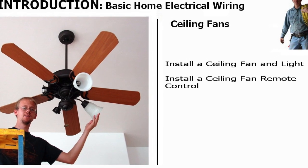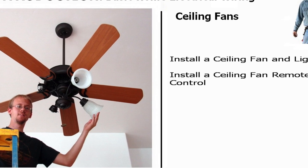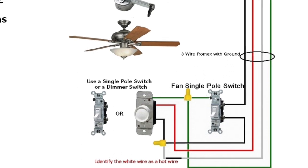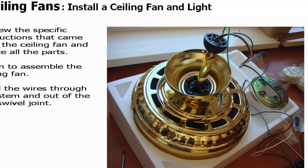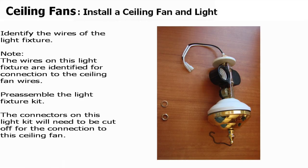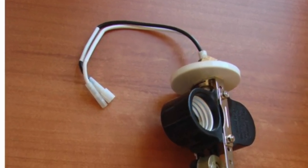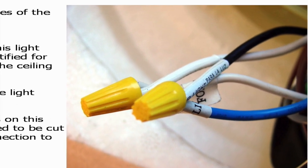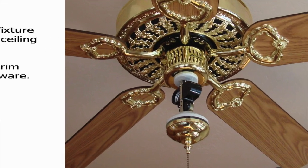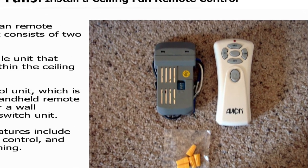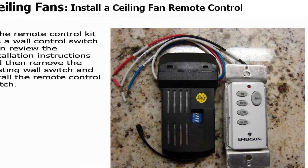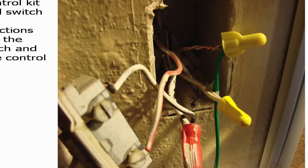Then we get into ceiling fans. We install a ceiling fan with a light kit and then install ceiling fan remote controls — two different types of controls. We provide full wiring diagrams showing how the ceiling fan is wired and remote control units are installed, including a handheld remote controller and a wall switch replacement unit and how that is installed and wired.